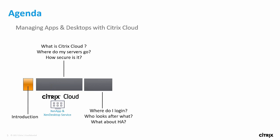We'll then talk about access scenarios — whether your user is inside the firewall, roaming, at home, or in an internet cafe. We'll cover which parts are Citrix's responsibility and which are yours, and also high availability — how that methodology changes when you move from on-premise to a cloud infrastructure.